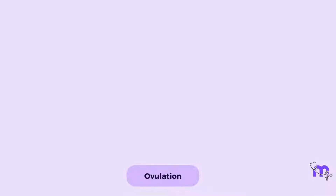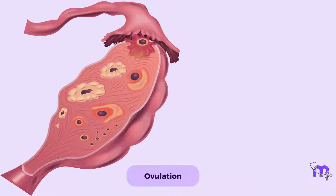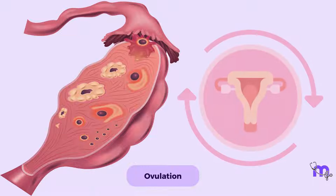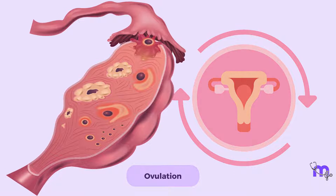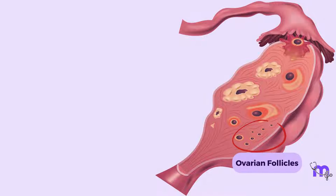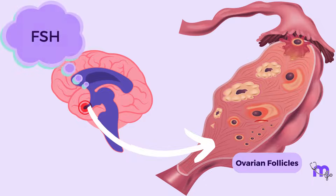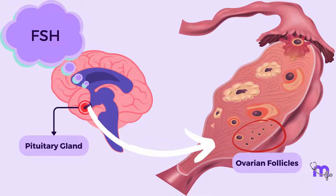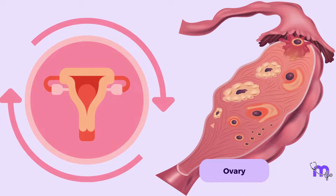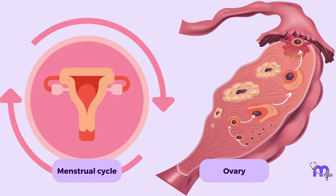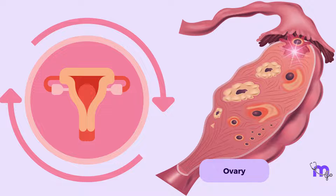Ovulation begins with the initial stages of follicular development, which occur during the early phases of the menstrual cycle. Multiple ovarian follicles begin to grow under the influence of follicle-stimulating hormone released by the pituitary gland. However, as the cycle progresses, only one dominant follicle emerges, signaling its readiness for ovulation.